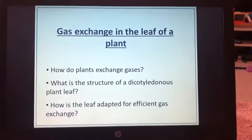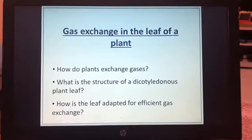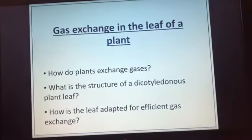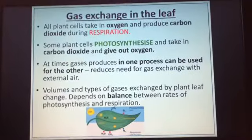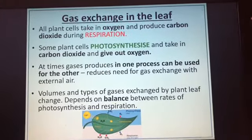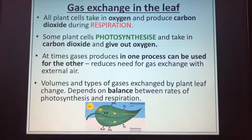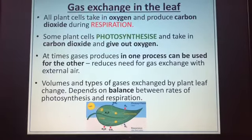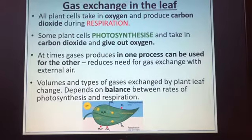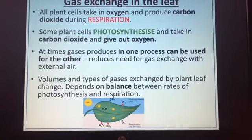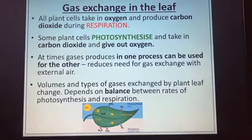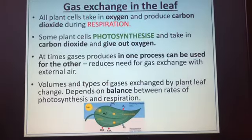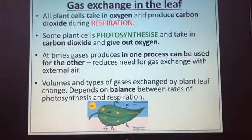Today we're going to be looking at gas exchange in the leaf of a plant — how plants exchange gases, what is the structure of the dicotyledonous plant leaf, and how a leaf is adapted for efficient gas exchange. All plants respire, taking in oxygen and giving out carbon dioxide. Some plant cells, like palisade cells, also photosynthesize, taking in carbon dioxide and giving out oxygen. The volumes of gases that need to be exchanged depend on the balance between the rates of photosynthesis and respiration.